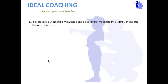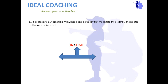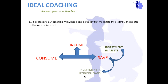The next assumption is that savings are automatically invested, and equality between the two is brought about by the rate of interest. According to classical theory, savings should be transferred into investment — in assets, loans, or other investments — and should not remain idle. This transfer is achieved through changing the rate of interest.